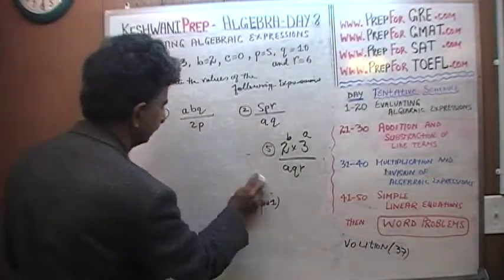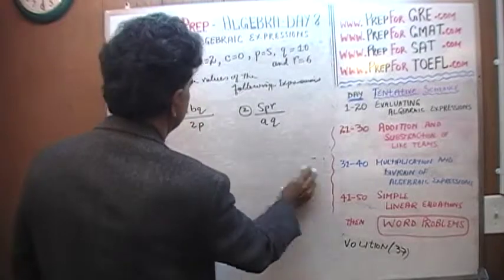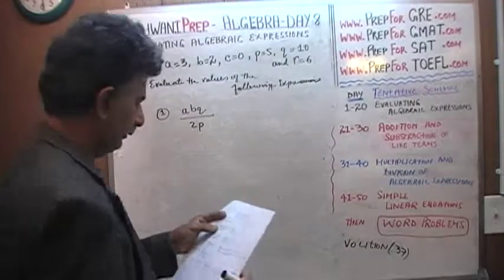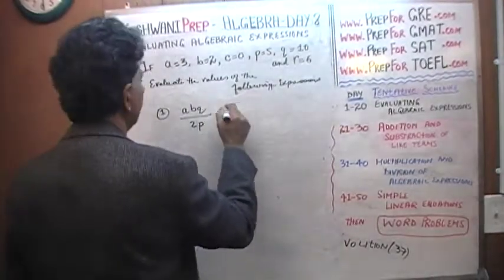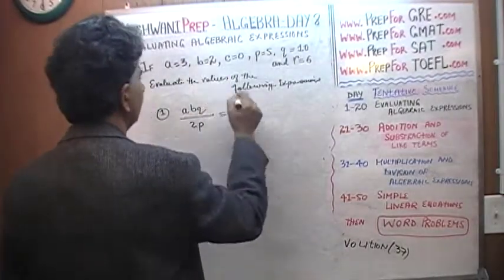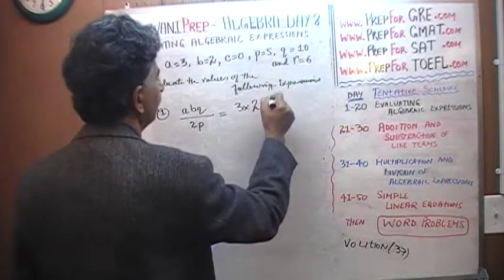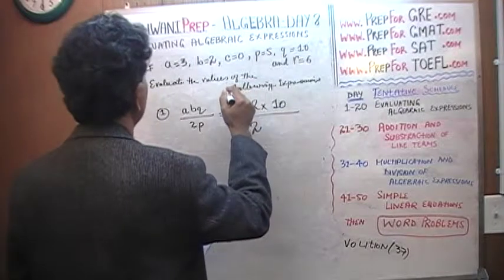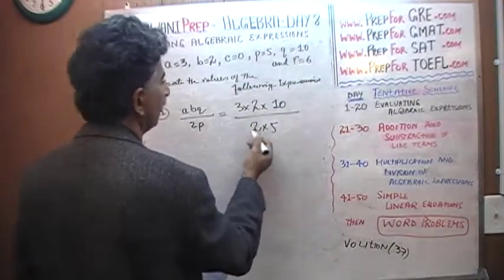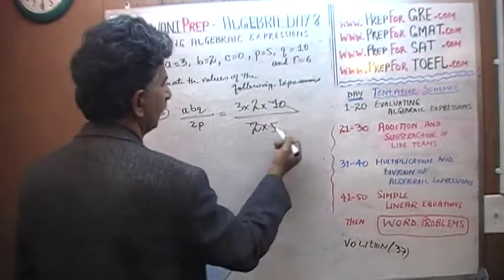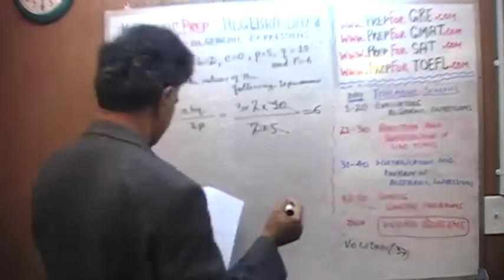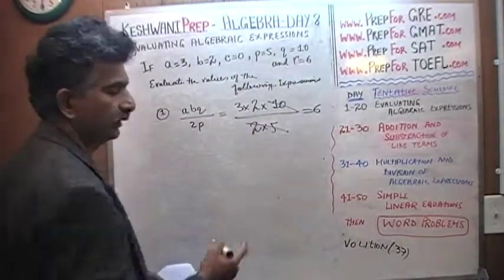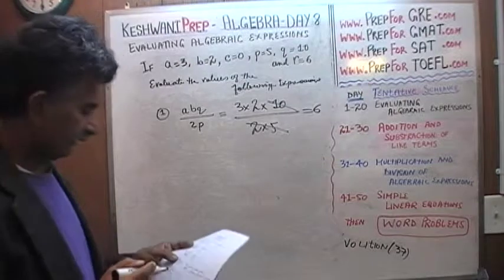Number 1. A times B times Q. A which is 3 times B which is 2 times Q which is 10 over 2 times P which is 5. 2 times 5 is 10. 10 goes out with this one. Answer is 6. 2 times 5 is 10. This 10 takes out that 10. The 10s cancel out.